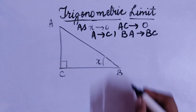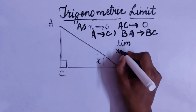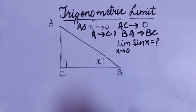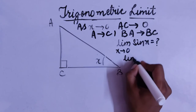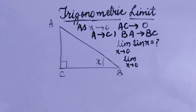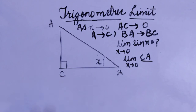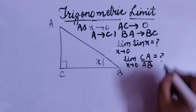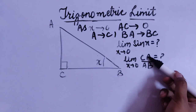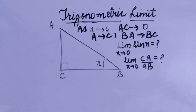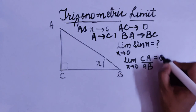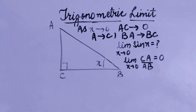Now if we have to evaluate the limit as x tends to 0 of sine x, please see over here. The value of sine x is perpendicular upon hypotenuse, which is CA upon AB. As we know, CA is approaching towards 0, so the limit as x tends to 0 of CA upon AB will be equal to 0. Therefore, limit x tends to 0 of sine x is equal to 0.